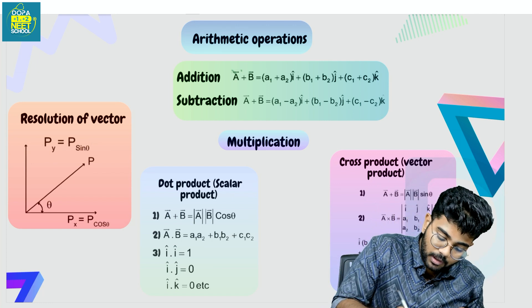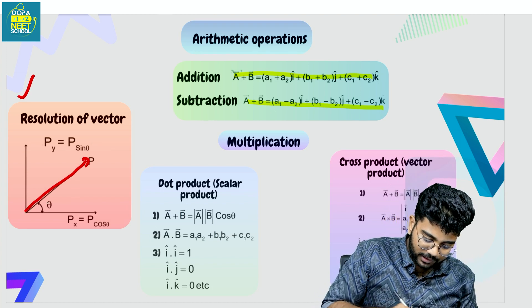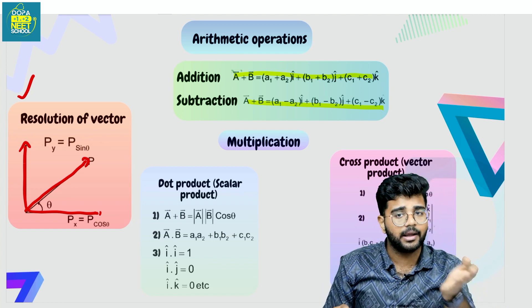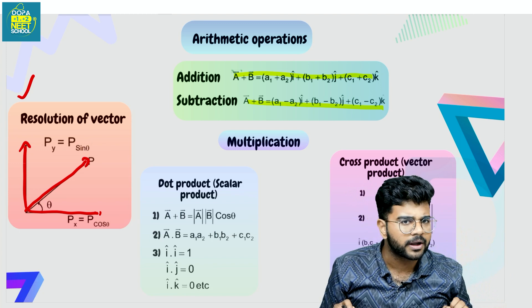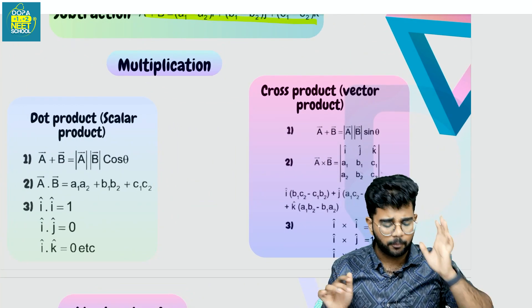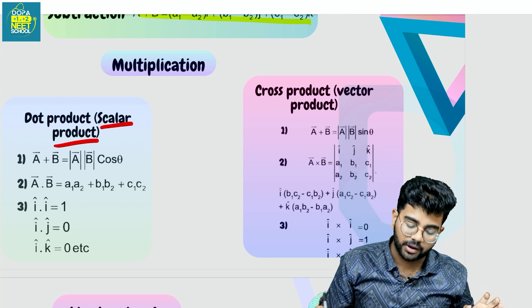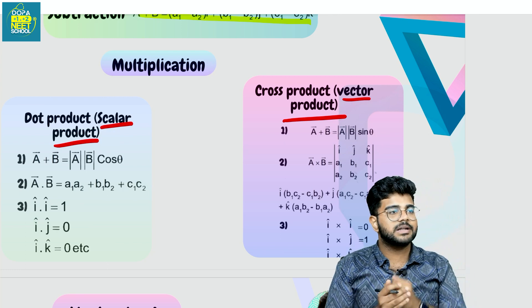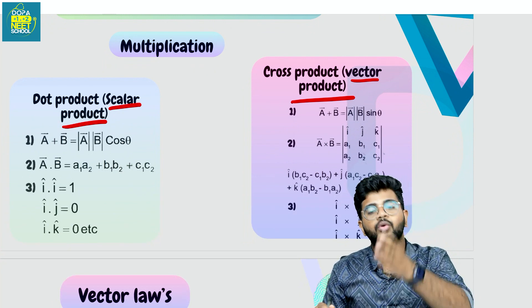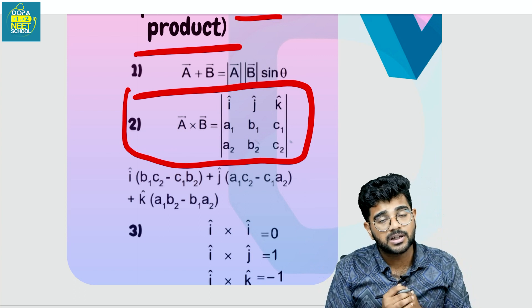What are the vector operations? You should know about addition, subtraction, and resolution — resolution is very important. One vector can be resolved into components: A cos theta and A sin theta at angle theta. We have two products: dot product and cross product. If you do a dot product, the result is a scalar quantity. For the cross product, the result is a vector quantity. A dot B is equal to AB cos theta.